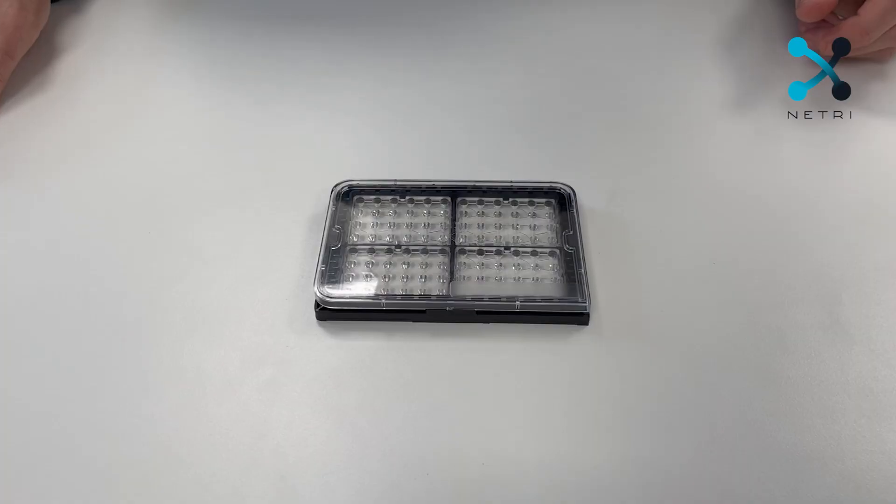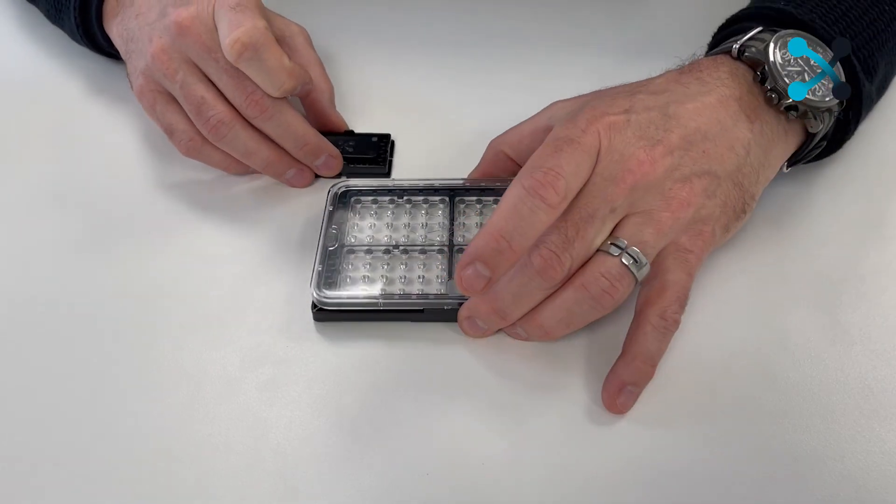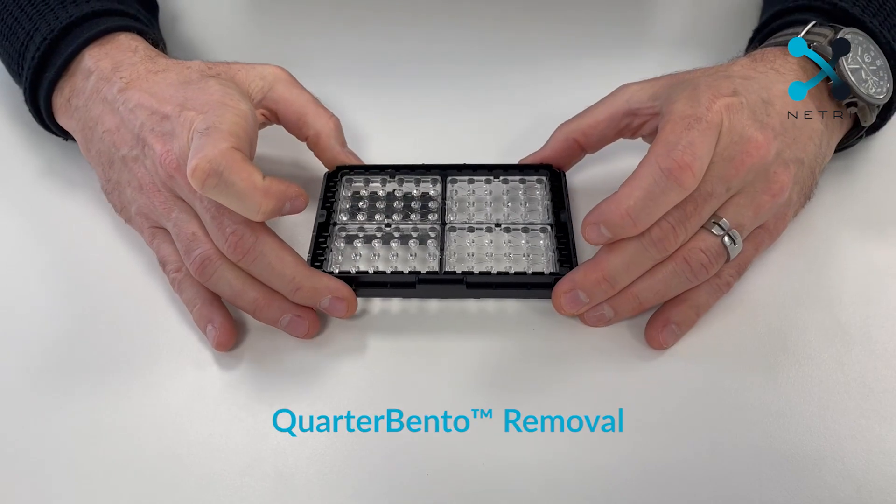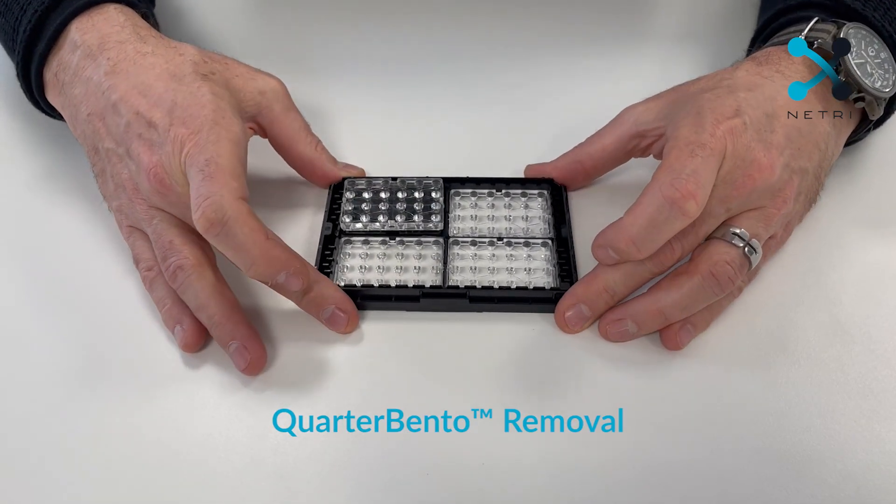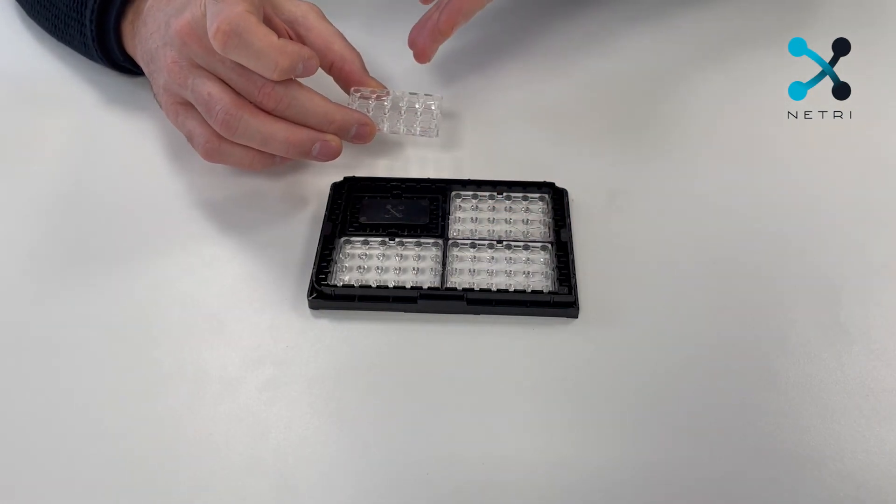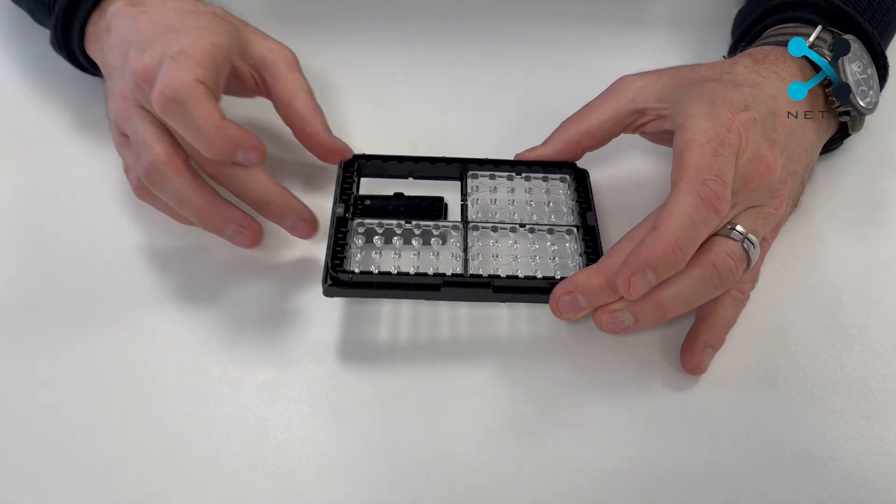Fourth, the NeuroBento allows you to individually remove QuarterBentos using what we call a plug. So you put the plug right under the QuarterBento you wish to remove and gently push it through. This allows you to remove your QuarterBento and go punch it, slice it, do what you want with it without disrupting the rest of the culture because that plug can actually take your QuarterBento's place.